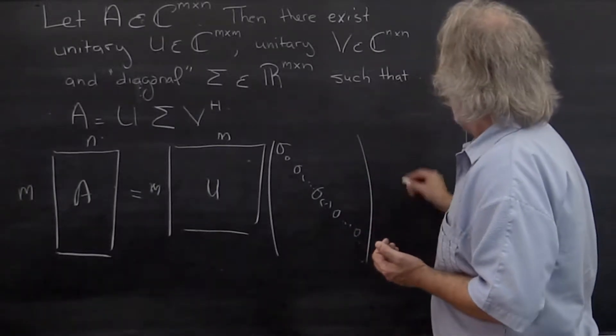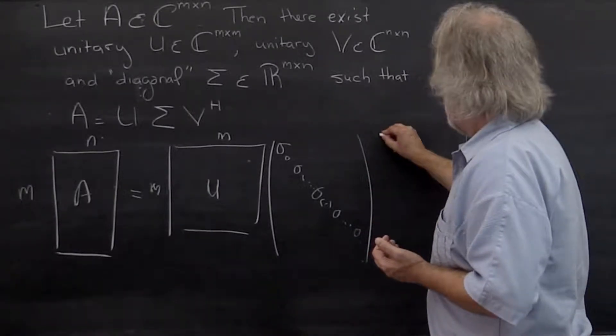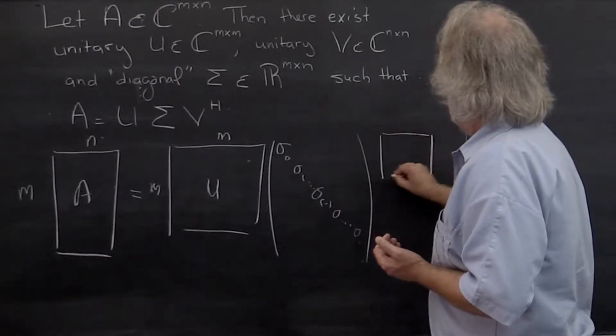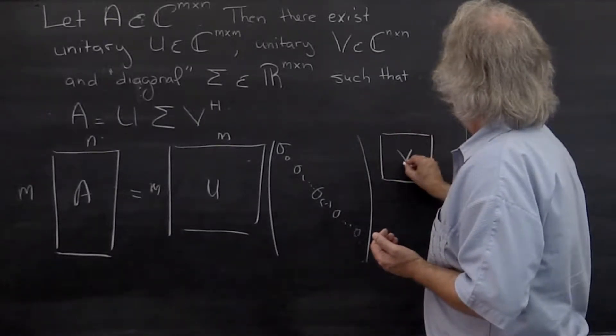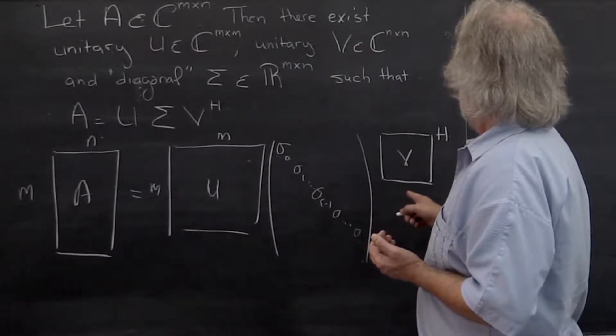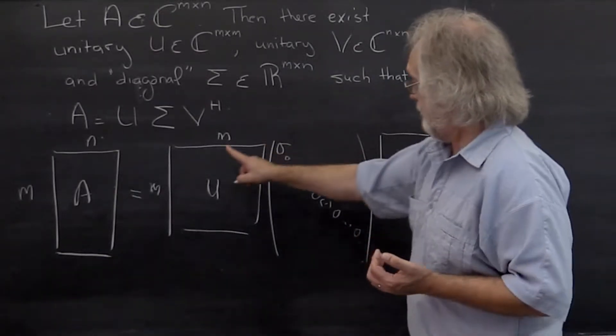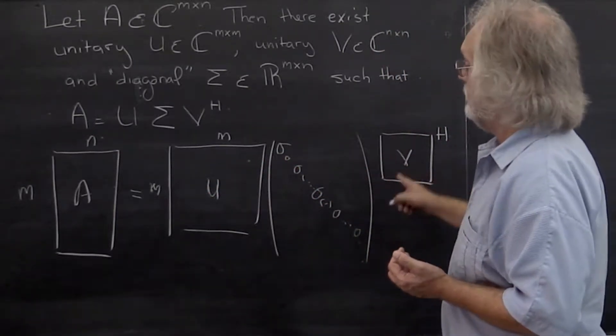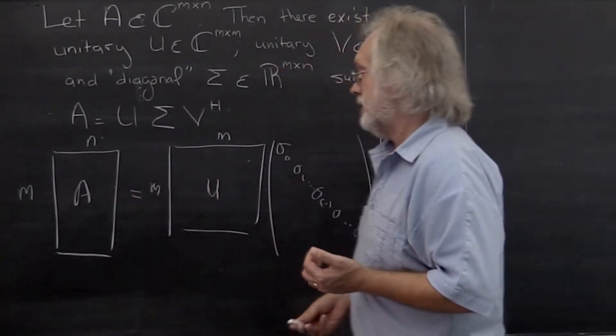And then finally you have a matrix V such that if you take a Hermitian transpose, if you take U times sigma times V, you get your matrix A back.